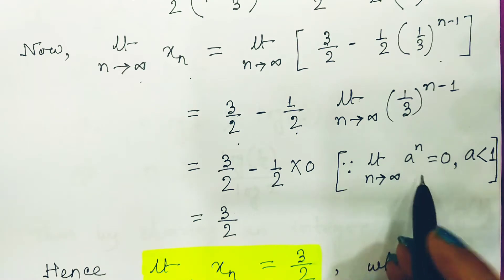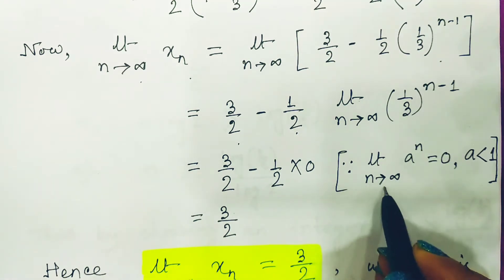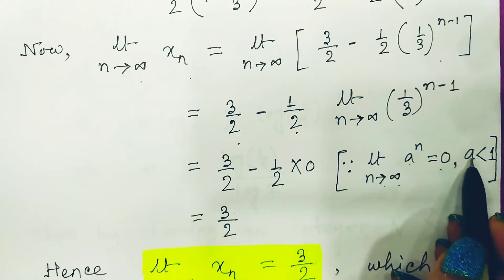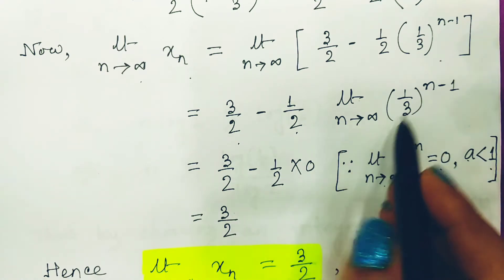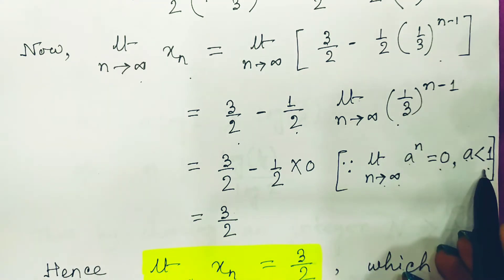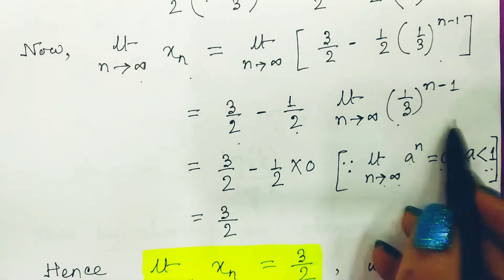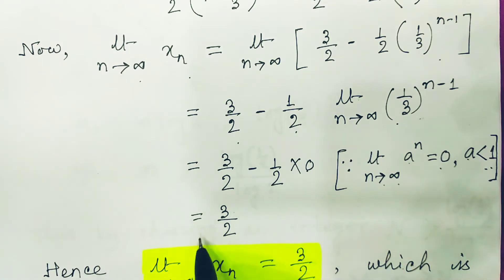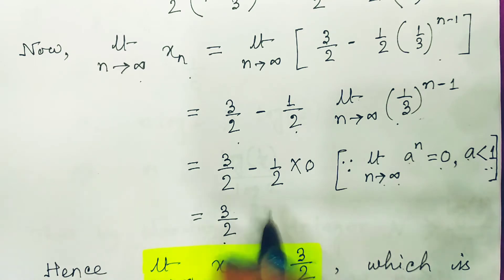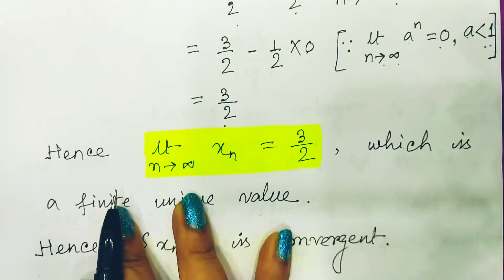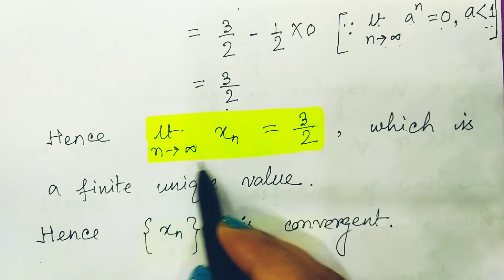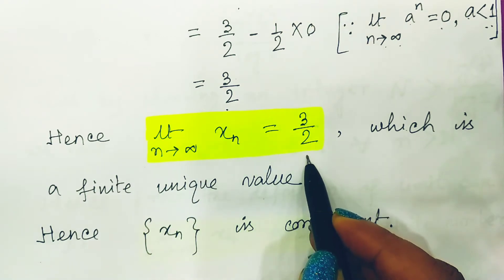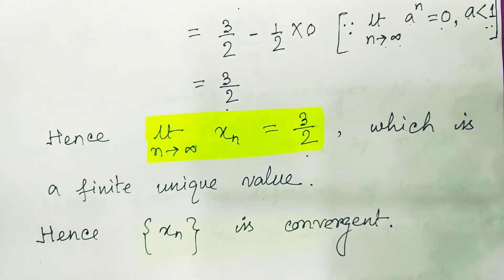Since we know that the limit as n tends to infinity of a^n equals 0 when |a| < 1, and here a = 1/3 which is less than 1, this term goes to 0. So finally we find the limit equals 3/2, which is a finite value. Therefore, the limit as n tends to infinity of xn equals 3/2, and the given sequence is convergent.